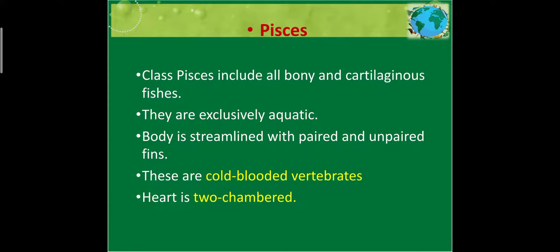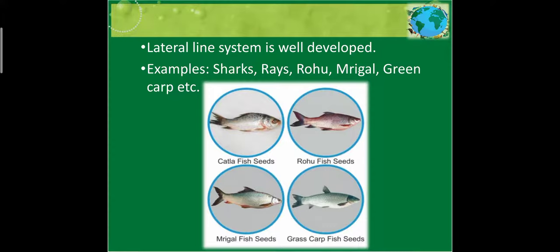The two-chambered heart has right and left parts, which play a role in blood purification. The lateral line system is well developed, helping maintain proper body functioning. Fishes lay eggs — with exception cases like dolphins which give birth to young ones. Their entire body is covered with scales, and their body has bones and cartilages. Examples: shark, rays, rohu, mrigal, green carp, tuna.